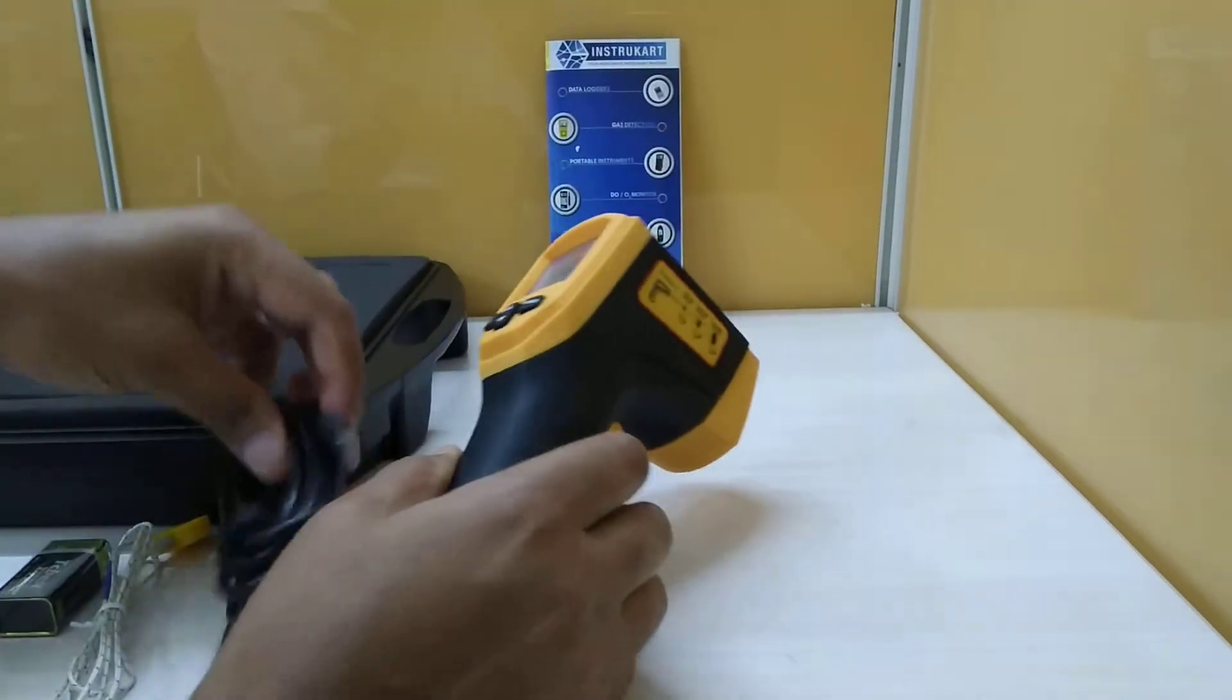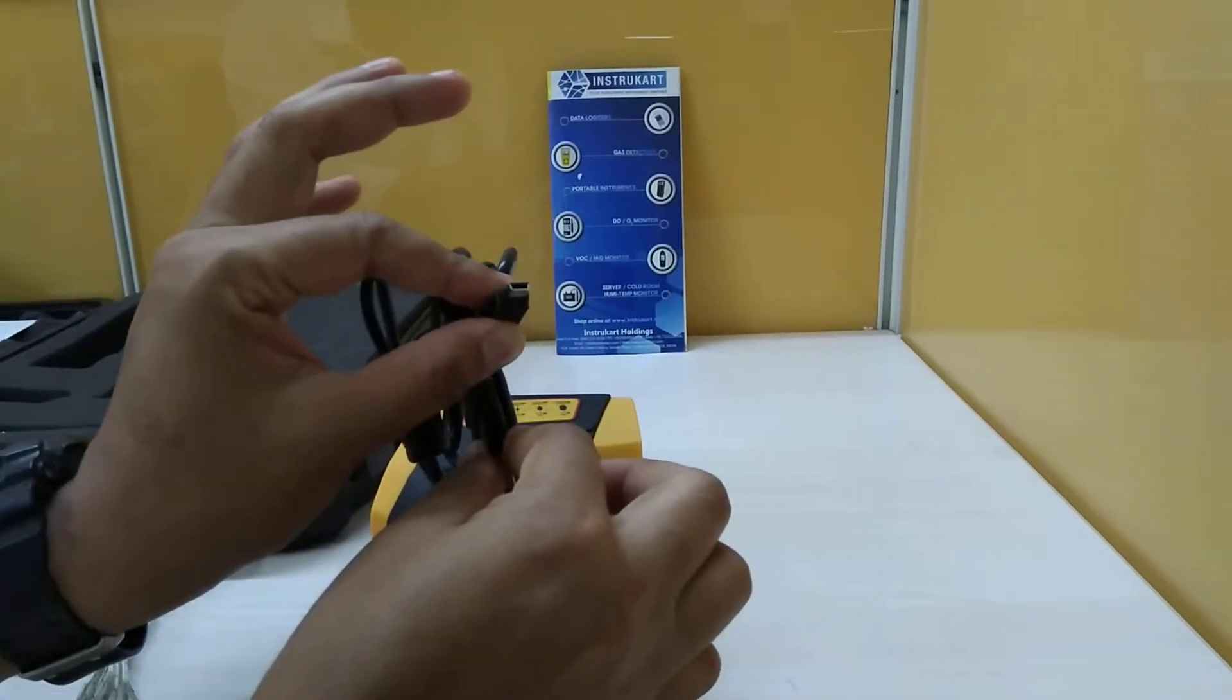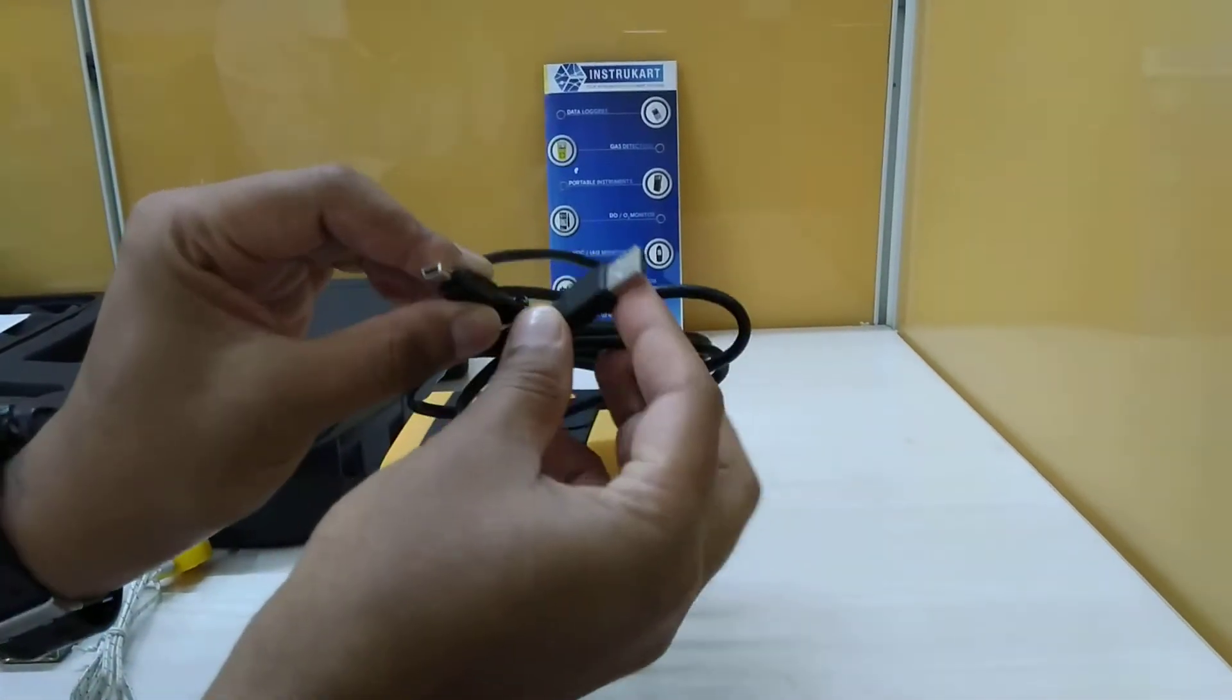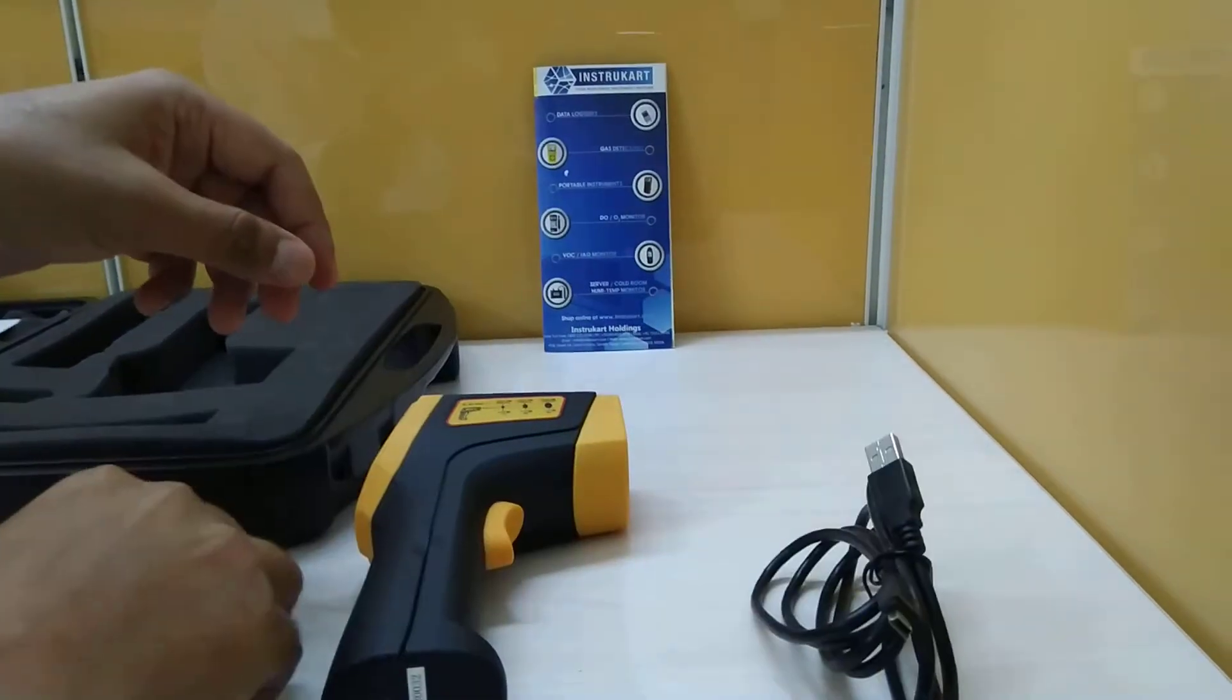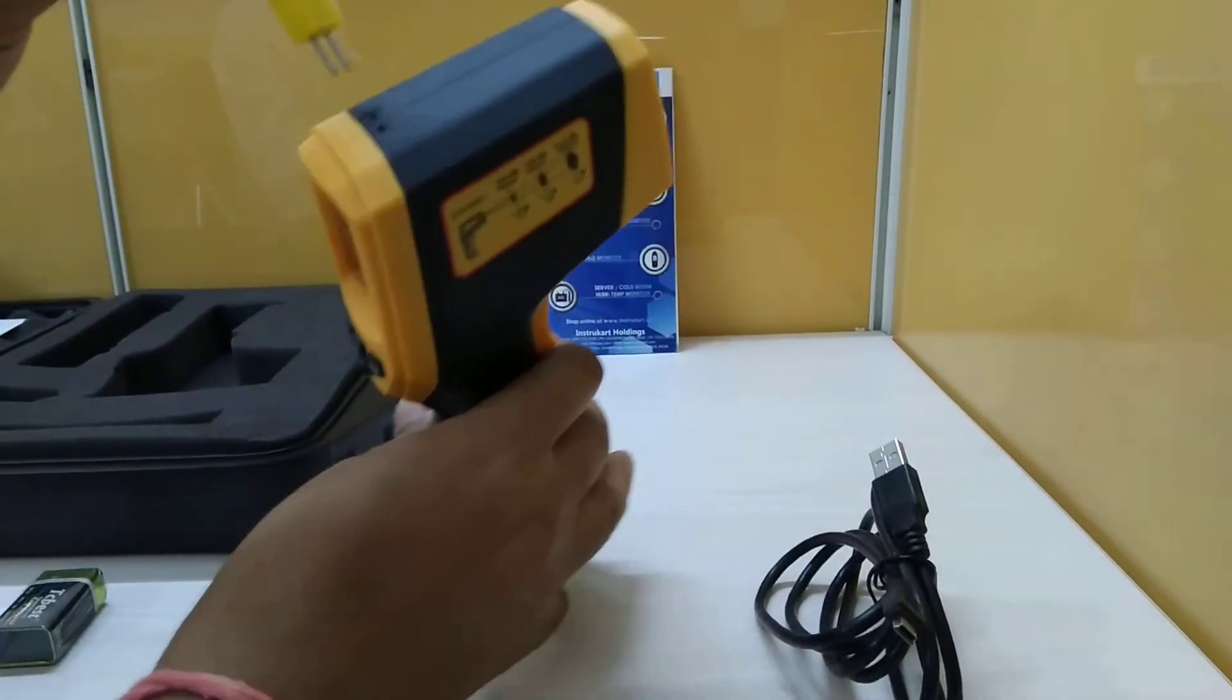The other standard accessories include the USB cable, the standard mini USB cable, and this is the K-type interface which you can fit here.